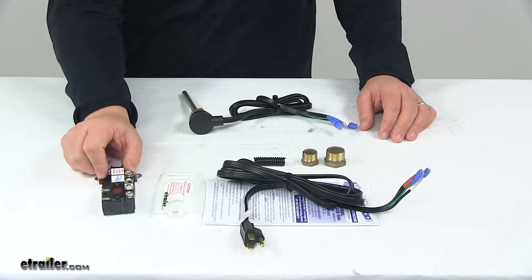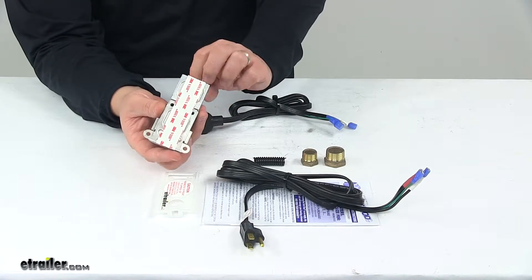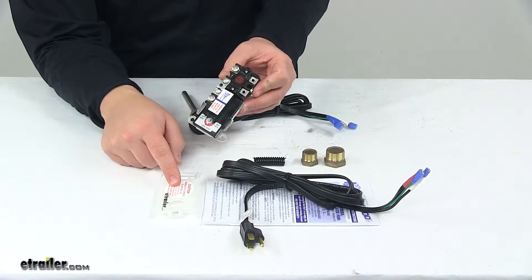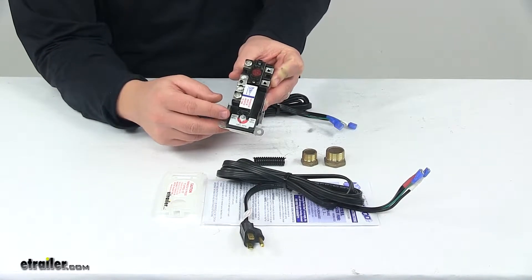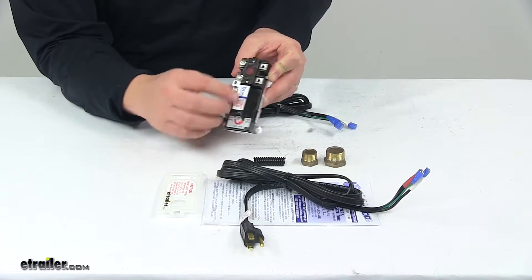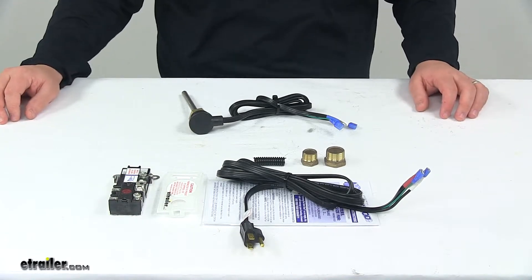This portion right here, this is the thermostat. It mounts directly to the back of the tank. It comes with a plastic thermostat cover, and it is adjustable from 90 degrees to 150 degrees, and it does come preset to approximately 125 degrees Fahrenheit.